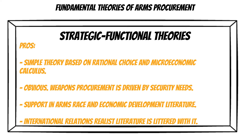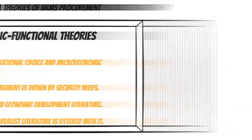There's also a lot of support for strategic functional theories. The arms race literature says that most states procure arms because they feel some sort of threat next to their border, and that research tends to bear out — India tends to arm itself when Pakistan arms itself and vice versa. We also find in the conflict literature that states tend to arm before they go into conflict. Although the theories seem obvious and have support, there are also a lot of problems with them.